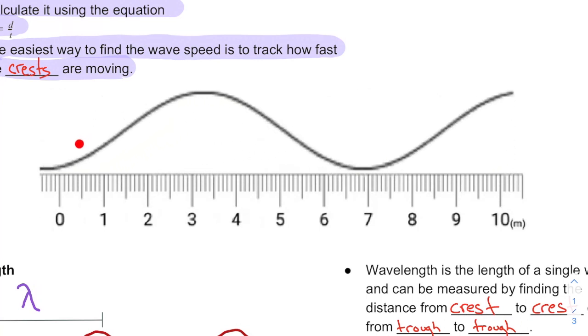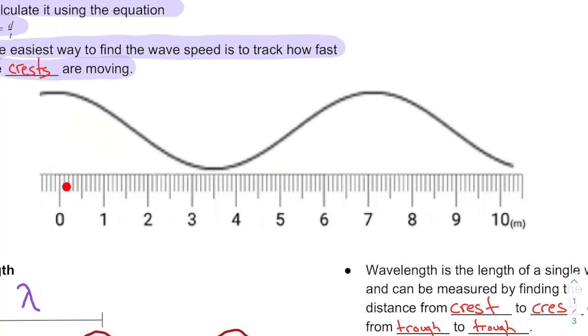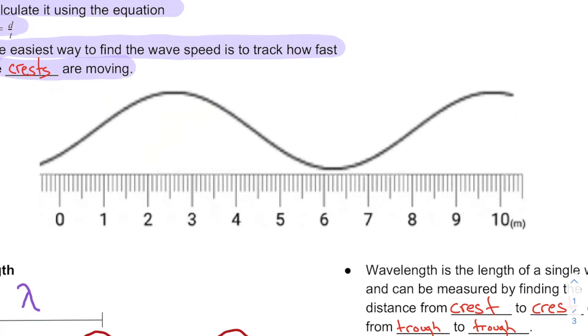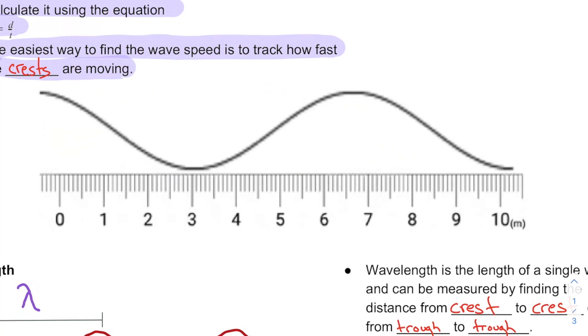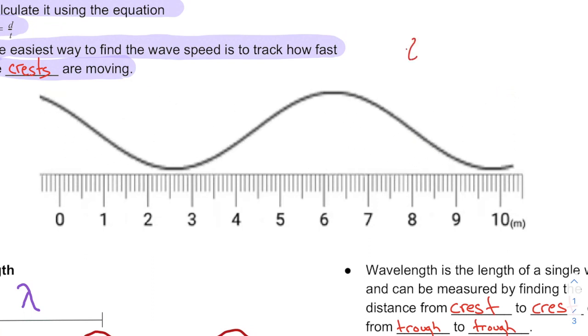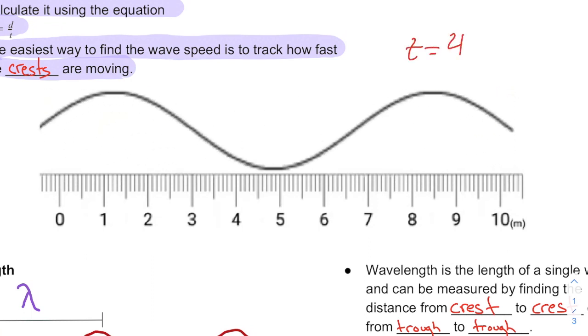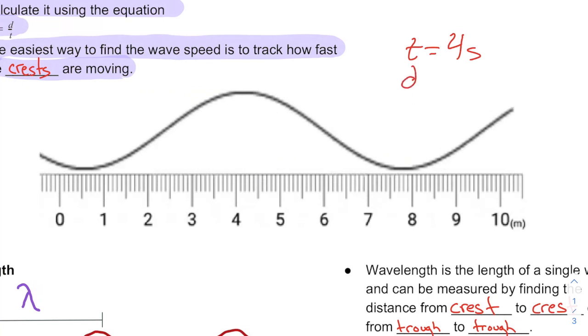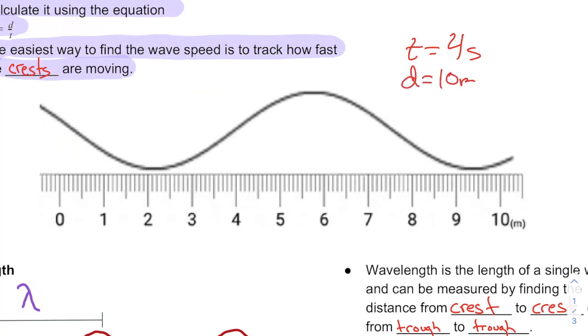This wave starts at zero meters. And let's start our timer off in three, two, one, zero, Mississippi, one Mississippi, two Mississippi, three Mississippi, four Mississippi. So I was just tracking that wave crest, and it took about four Mississippis, or four seconds, four seconds, to go a distance of 10 meters.